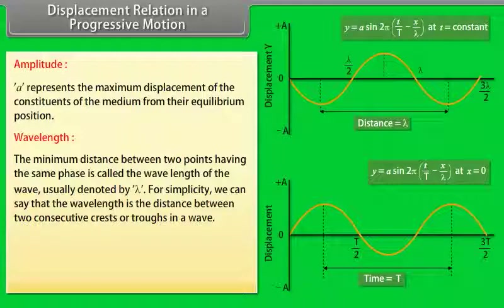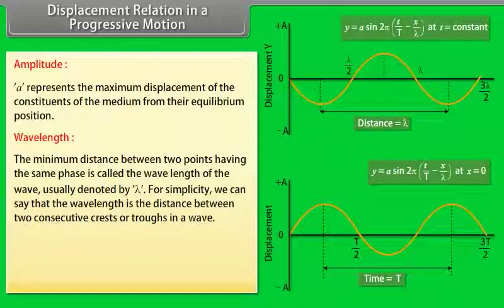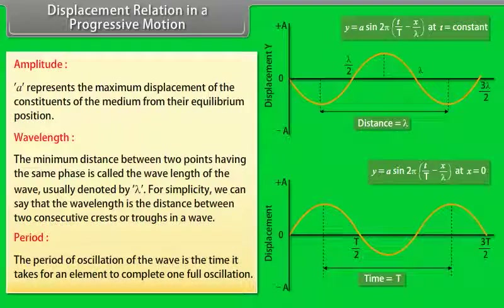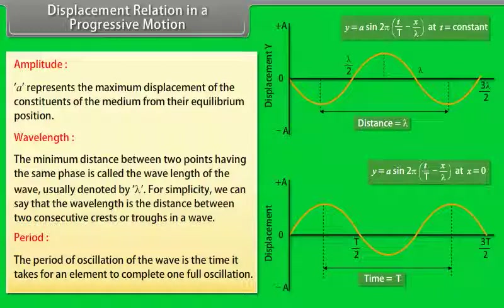For simplicity, the wavelength is the distance between two consecutive crests or troughs in a wave. Period: The period of oscillation of the wave is the time it takes for an element to complete one full oscillation.